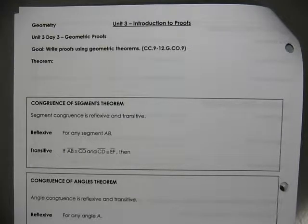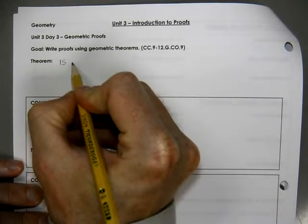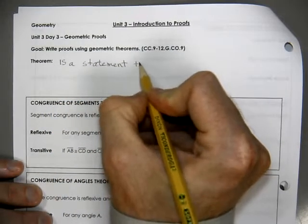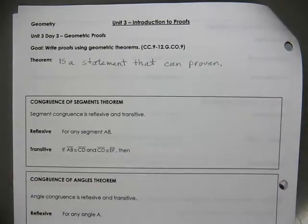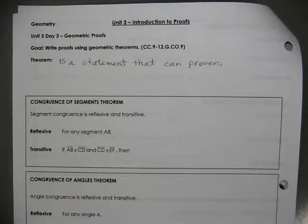This is Geometry, Unit 3, Day 3. We're working on figuring out our geometric theorems. A theorem is a statement that can be proven. A definition is a statement that we don't need to prove — it explains the term. A postulate is a term that we accept to be true. And a theorem is a statement that can be proven.